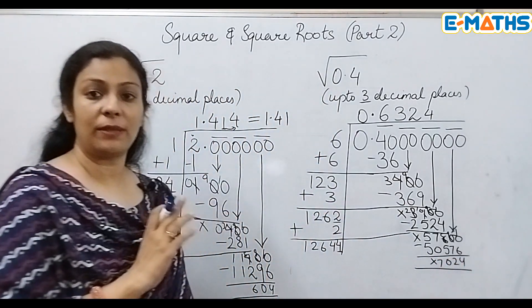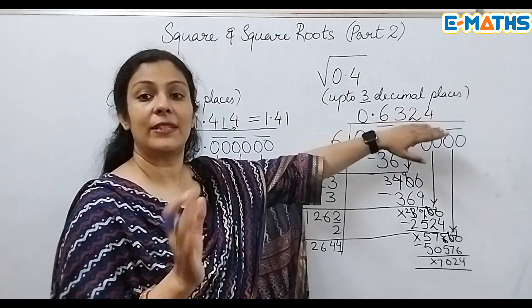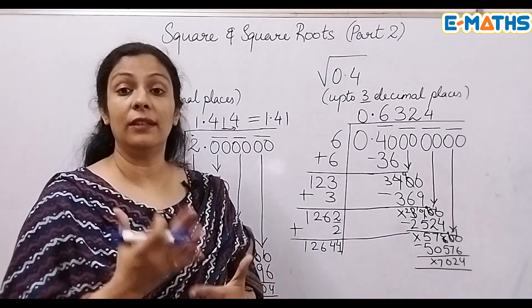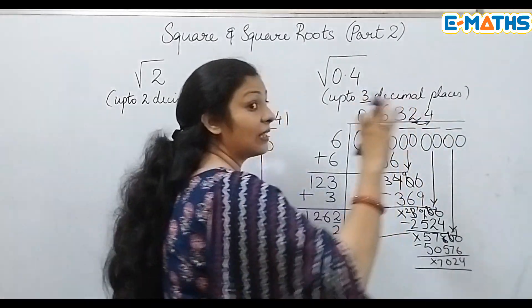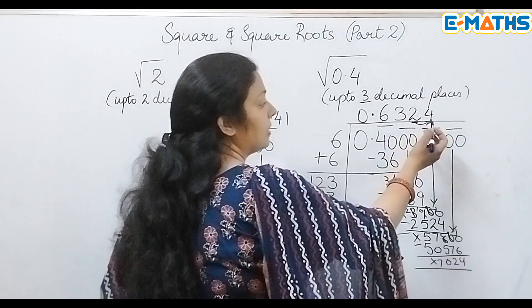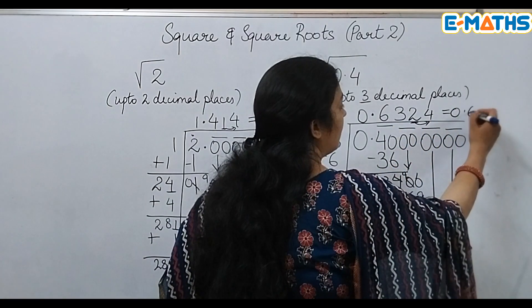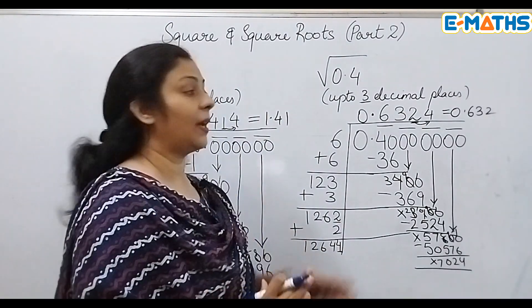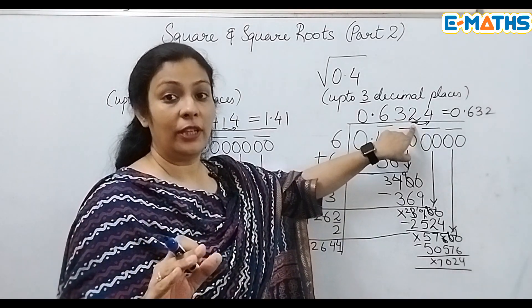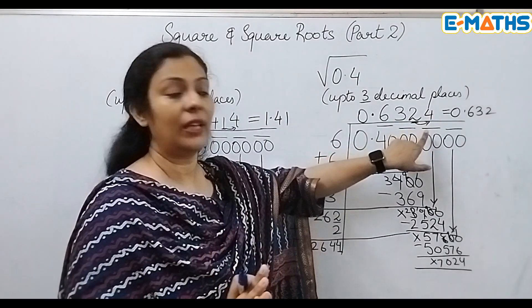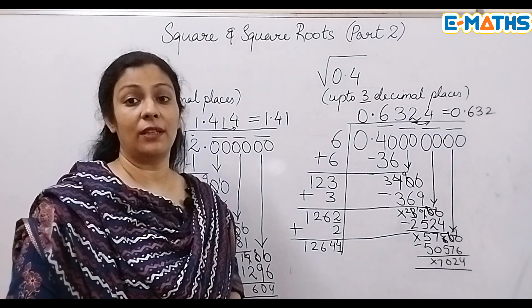I only need to solve this much because I need my answer up to three decimal places. We have already got four decimal places in the quotient: 0.6324. The answer to the nearest thousandth: look at the thousandth place (2) and the digit next to it (4). Since 4 is less than 5 we don't add 1. The answer is 0.632. If the digit were 5 or more, we would add 1 to round up.